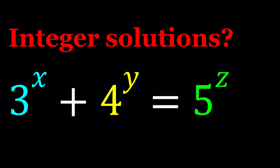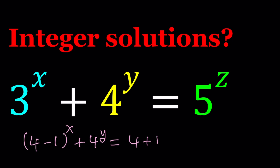You probably have some ideas at this point, but let's see how this goes. First of all, I'm going to go ahead and write the 3 as (4 minus 1) to the power x, and then 4 to the y, and write the 5 as (4 plus 1) to the power z.